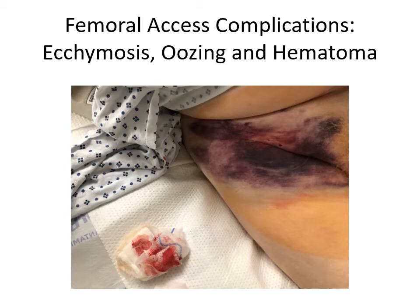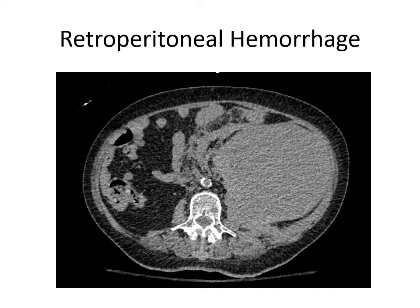This is an example of ecchymosis and groin hematoma complicating femoral access. In this slide, we see an example of a CT scan from a patient who underwent a procedure via left femoral artery access and who developed a massive retroperitoneal hemorrhage resulting in shock. This echogenic collection represents the retroperitoneal hematoma.